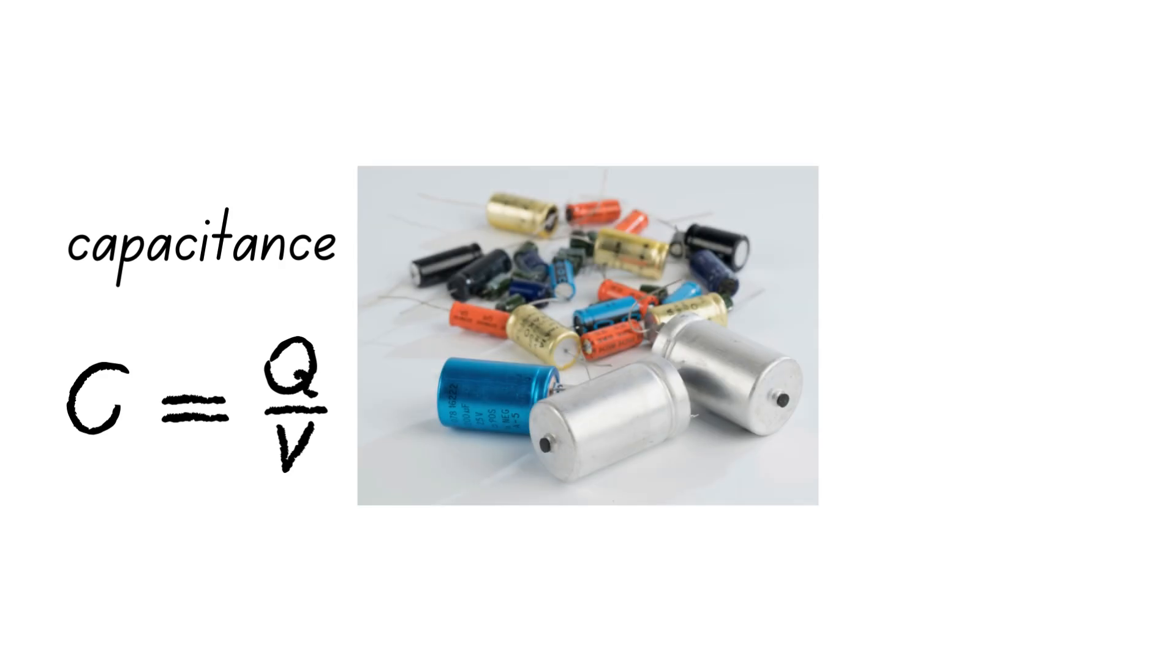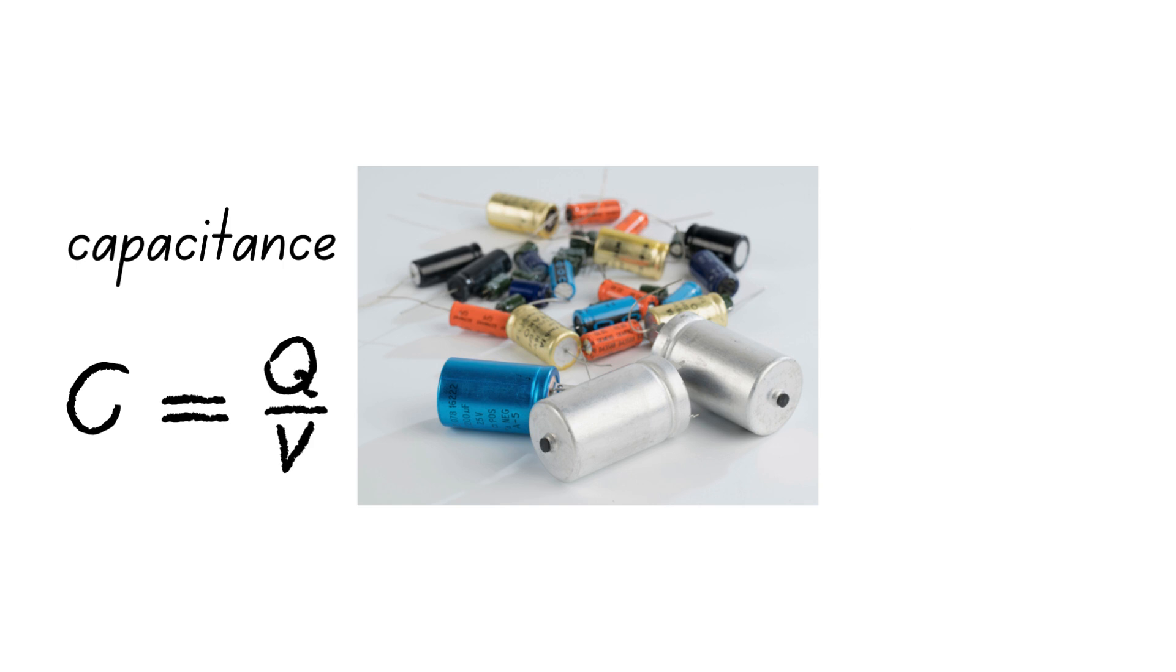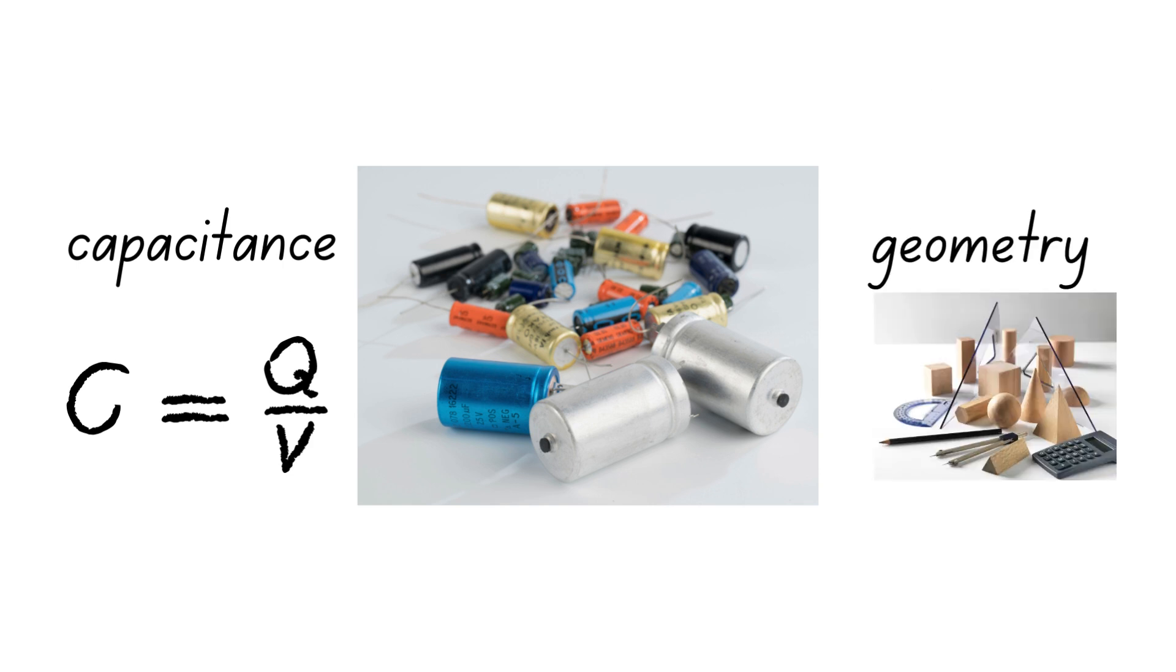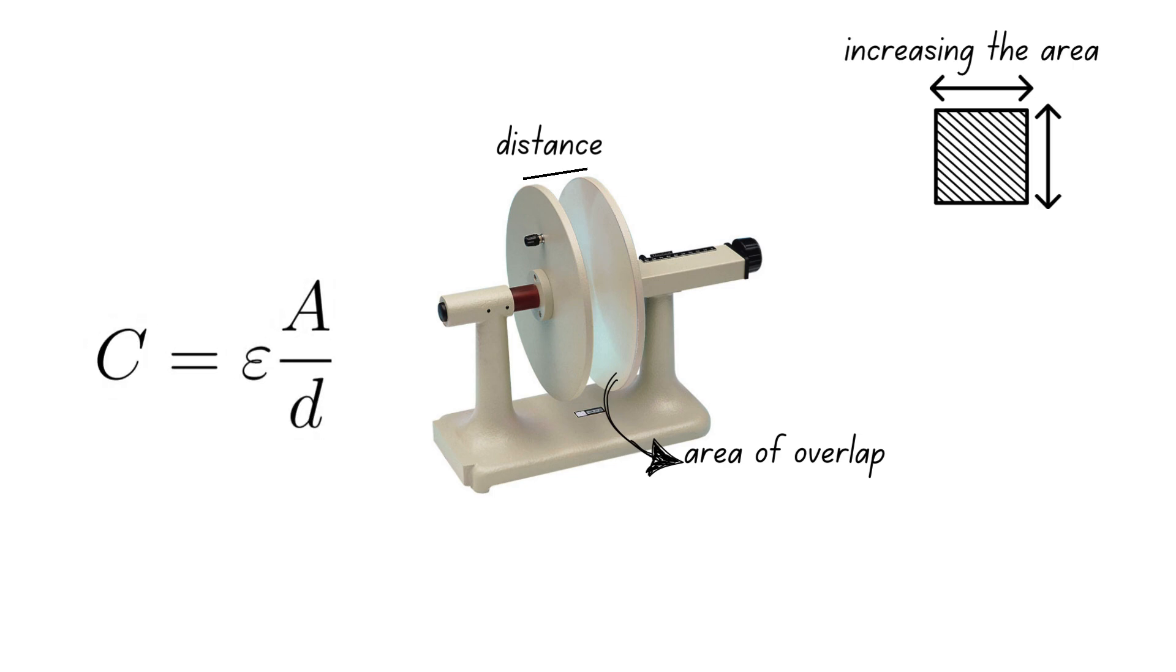Although capacitance is defined in terms of charge and voltage, it is independent of the two quantities and only depends on the geometry of the capacitor in question. For a parallel plate capacitor, the capacitance is directly proportional to the area of overlap between the plates and inversely proportional to the distance between them. Thus, increasing the area or reducing the separation of the plates increases capacitance.